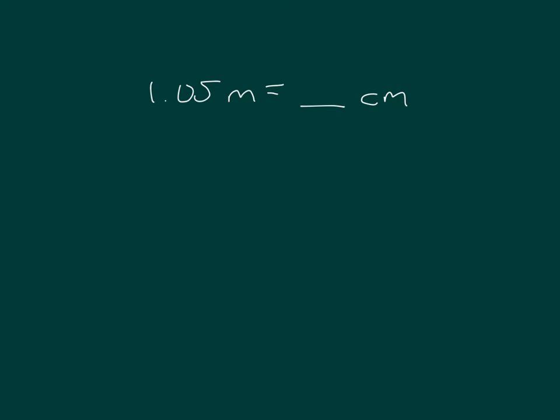Here's another problem. This time we're going from meters to centimeters. 1.05 meters equals blank centimeters. We start with 1.05 meters equals 1.05 times 1 meter. We know that one meter equals 100 centimeters. So our next line we can write 1.05 times 100 centimeters because one meter equals 100 centimeters. When we do that work, we get 105 centimeters.